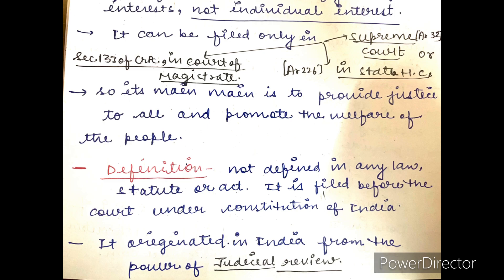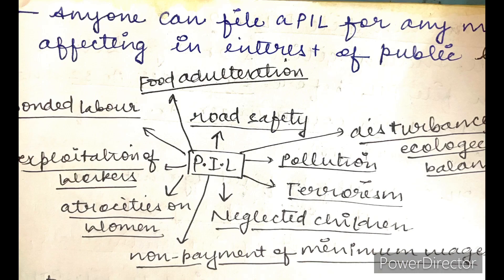PIL is originating in India from the power of judicial review। मैंने एक chart बना दिया है जिसमें PIL किन matters में file की जा सकती है — जैसे food adulteration, road safety, distribution, disturbance of ecological balance, pollution, terrorism, neglected children, non-payment of minimum wages, atrocities on women, exploitation of workers, bonded labor, etc.। इन सारे matters में जो people at large की problem है, किसी एक particular person की नहीं, उनमें हम PIL file कर सकते हैं।